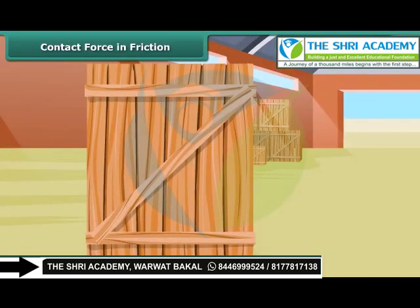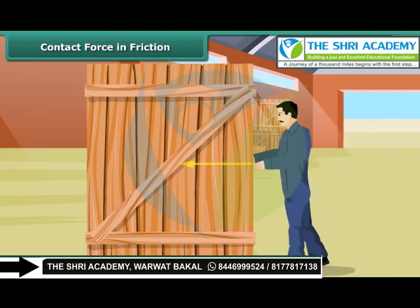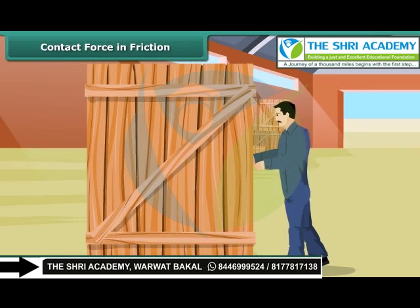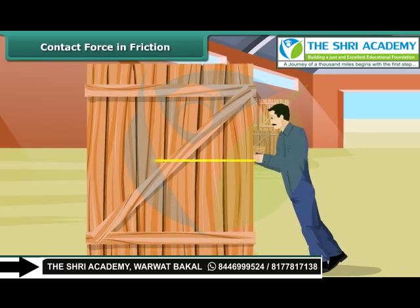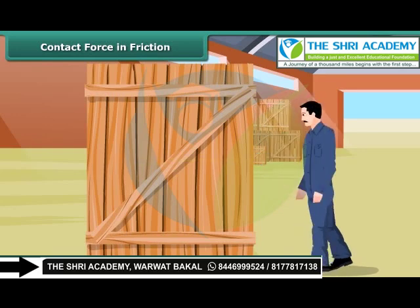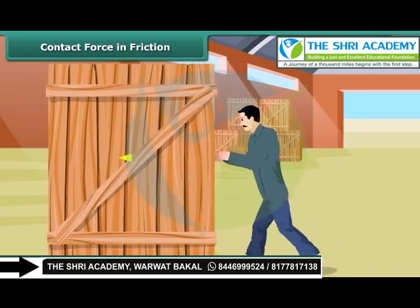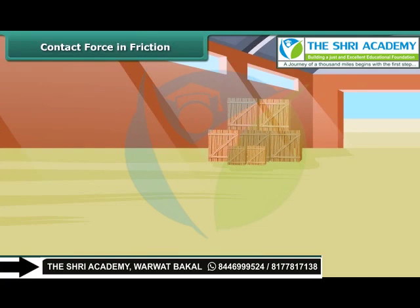Friction also depends on the amount of contact force pushing the two surfaces together. Here, a man is trying to push a heavy box, but the box is not moving. When the box is pushed, the bottom of the box and the floor rub one another and friction comes into play, resisting the motion. The force from friction is more than the push force being exerted by the man. The box will move only when a greater force than the force from friction is applied. Once the box starts sliding, it becomes easier to keep it in motion. This example proves that friction depends on the amount of contact force pushing the two surfaces together.